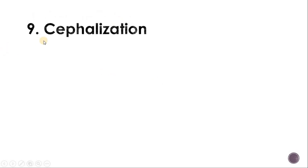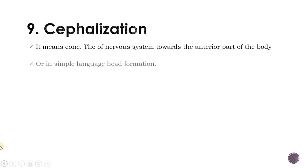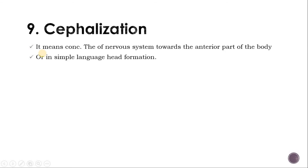Now we get to another parameter: cephalization. What is cephalization? The concentration of sense organs and nerve control at the anterior end of the body forming a head and brain, both during evolution and in the course of embryonic development. Cephalization means the formation of the central nervous system in the organism and the differentiation of the anterior end into a definite head.